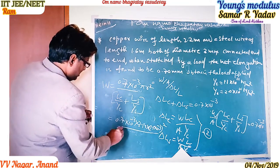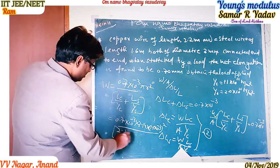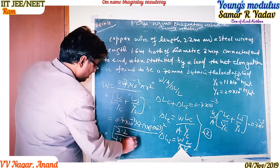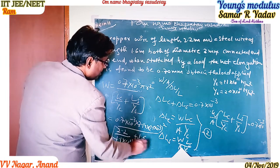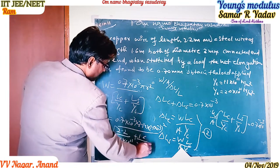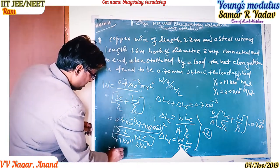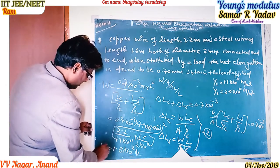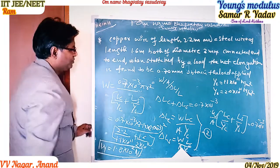Substituting the values, including 1.6 upon 2 into 10^(11) for the steel term, we solve and obtain W equal to approximately 1.8 into 10^2 Newtons.